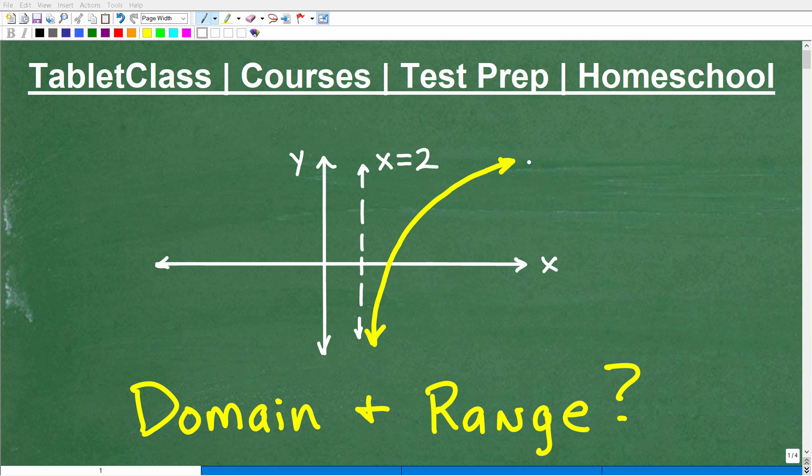Okay, so what do we have here? Well, we have a graph, and obviously there's something going on with this particular graph, and we want to determine the domain and range with nothing but this graph.